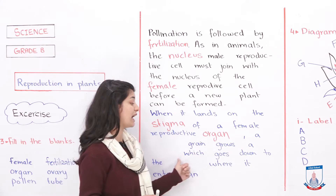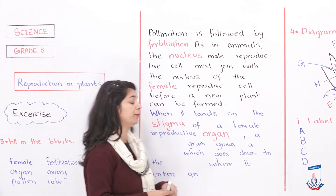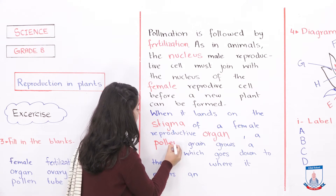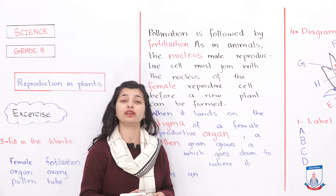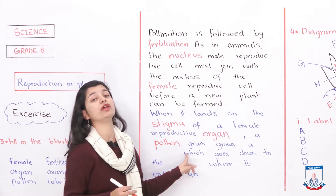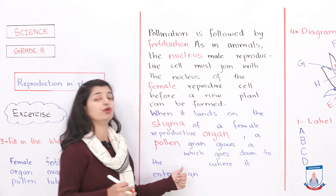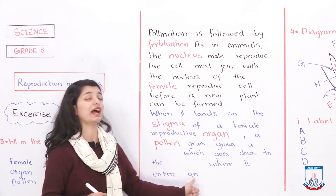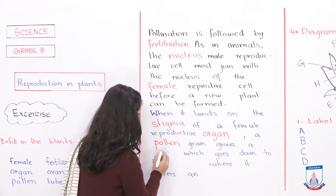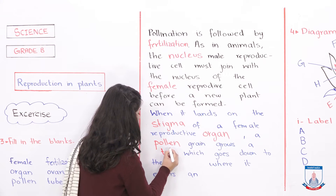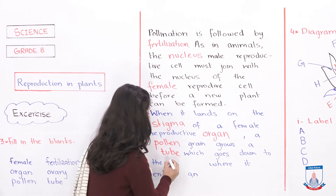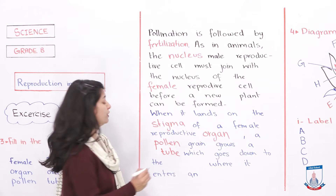A dash grain grows a dash — what will it grow? Pollen grain, obviously, because we talk about plant fertilization and pollen grains throughout this entire process. The pollen grain grows a tube which goes down to the ovary. So: a pollen grain grows a pollen tube, which goes down to the ovary.